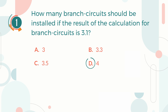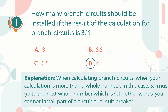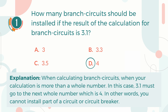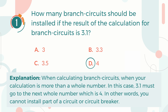The correct answer is D. 4. Explanation: When calculating branch circuits, when your calculation is more than a whole number — in this case, 3.1 — it must go to the next whole number, which is 4. In other words, you cannot install part of a circuit or circuit breaker.